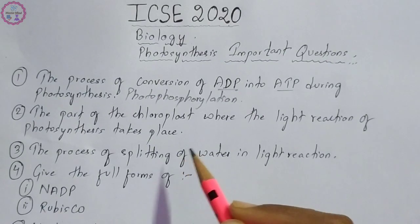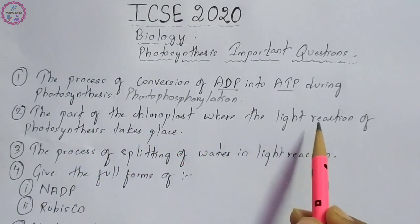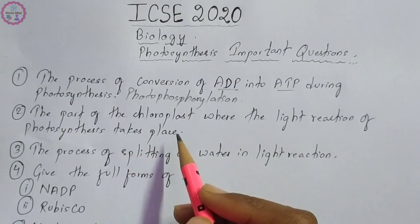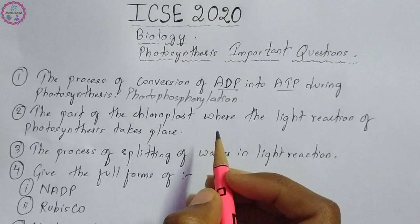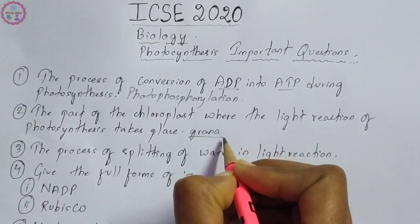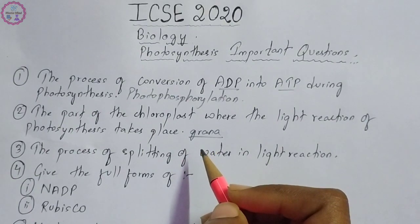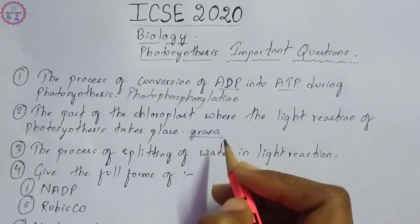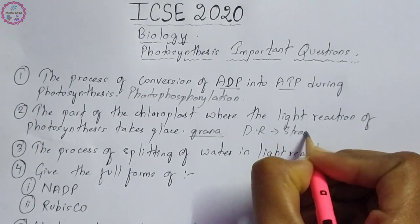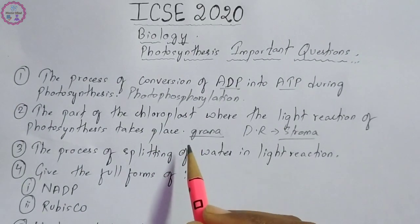The next question is again name the following type. The part of the chloroplast where the light reaction of photosynthesis takes place — the light reaction takes place in the grana of the chloroplast. If the question is about the dark reaction, then you have to write stroma. Dark reaction occurs in the stroma of the chloroplast, and light reaction occurs in the grana.